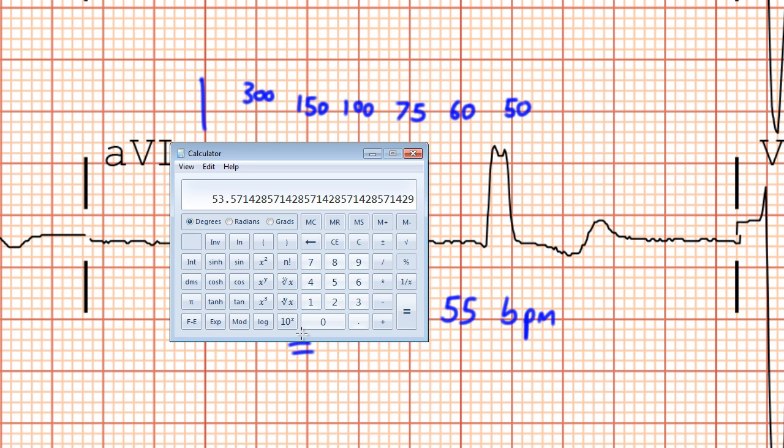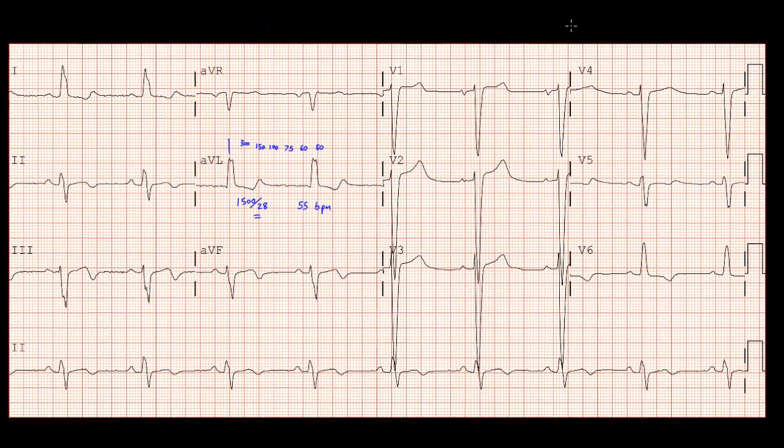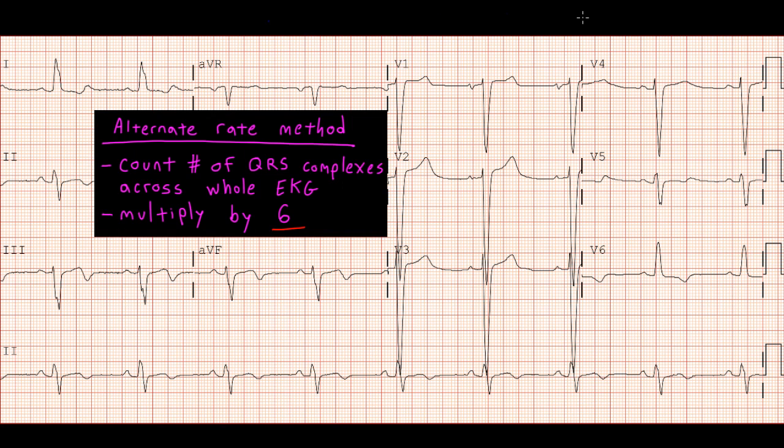So besides the box method, or the 300 divided by X, or if you're totally OCD, the 1500 divided by X method, there's another way you can figure out the heart rate pretty easy. And that just requires you to look at your 12 lead EKG as a whole and consider the fact that the entire 12 lead tracing lasts for 10 seconds in duration. So all you have to do here is count the number of QRS complexes on your tracing and multiply it by 6.